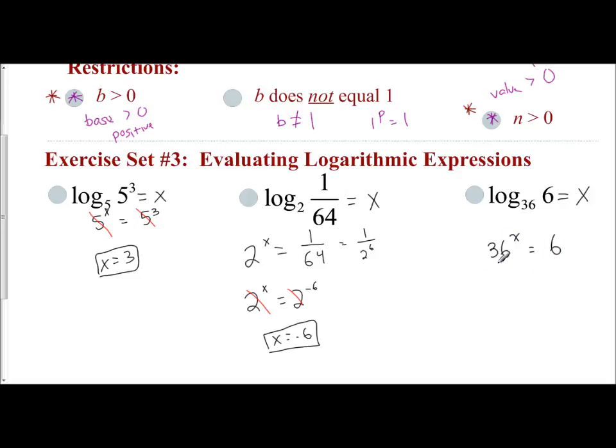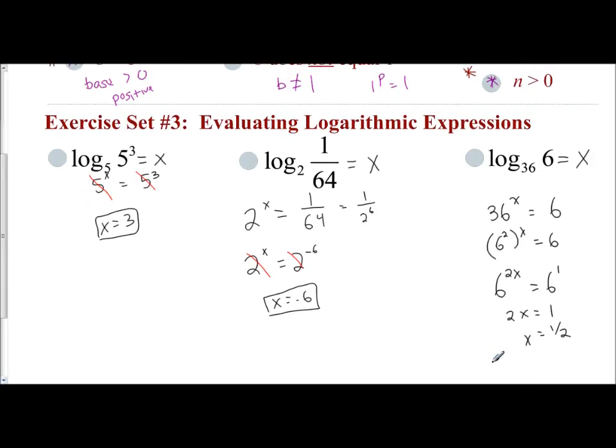Well, let's find the same base. 36 is 6 squared. So 6 squared to the x power is 6. And our power rule says distribute 2 times x, and really it's 6 to the first. You have the same base, so just set the exponents equal. 2x equals 1, x equals 1 half.